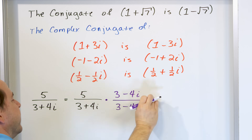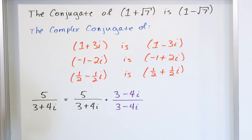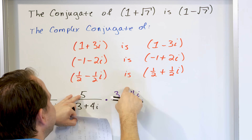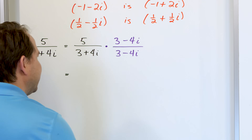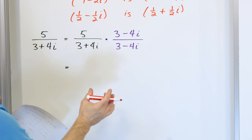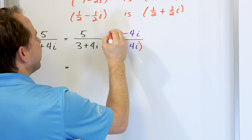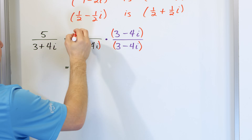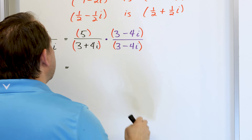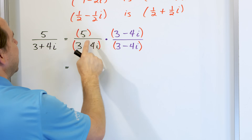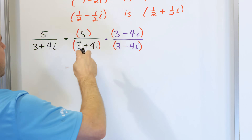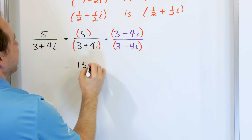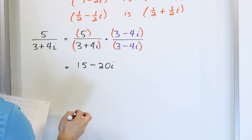We multiply by three minus four i over three minus four i, because we want to multiply by one. I want you to imagine invisible parentheses surrounding the complex numbers. When five is multiplied by this, it gets distributed into each term. Five times three becomes fifteen, five times negative four i becomes negative twenty i. That's the numerator.